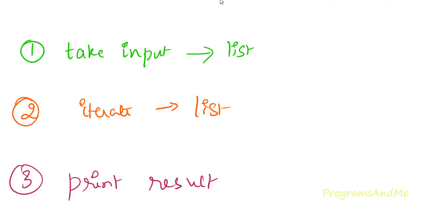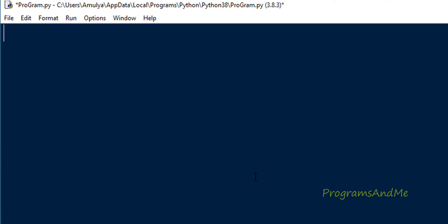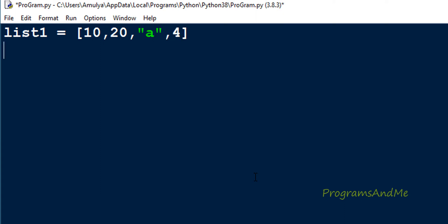These are the three steps. First, let's take the input. You can take input in two ways: directly provide a list, or take user input. I'll take the list directly — I'll name it list1 and assign it the values 10, 20, and a string value. This is my input.